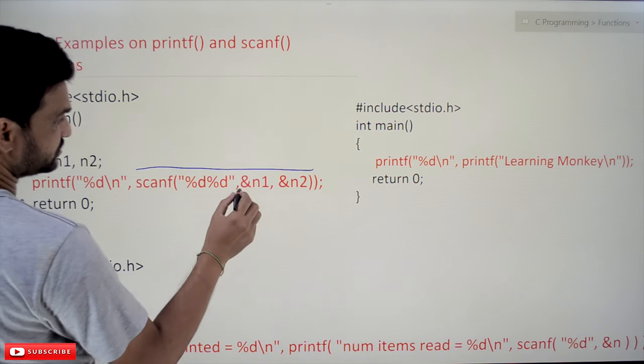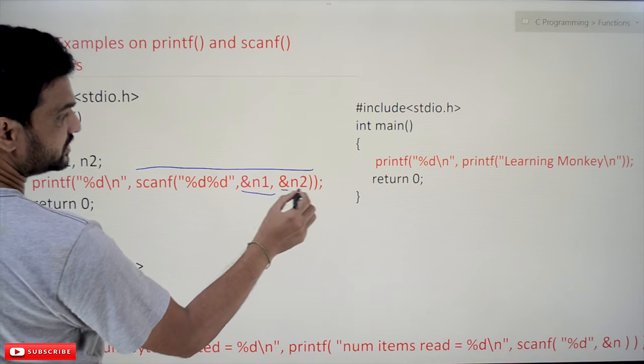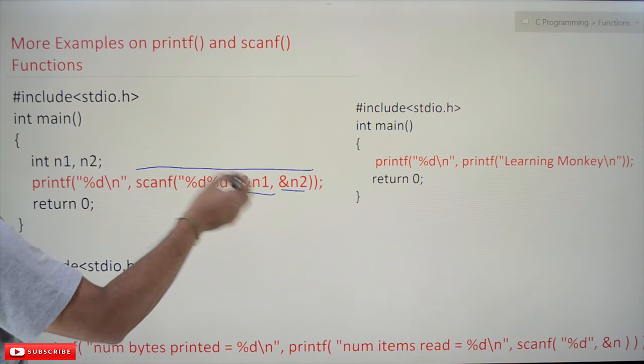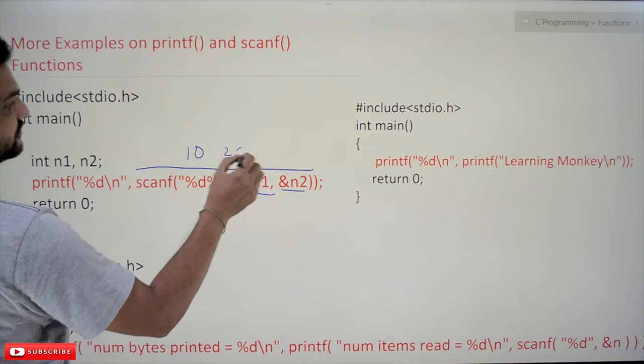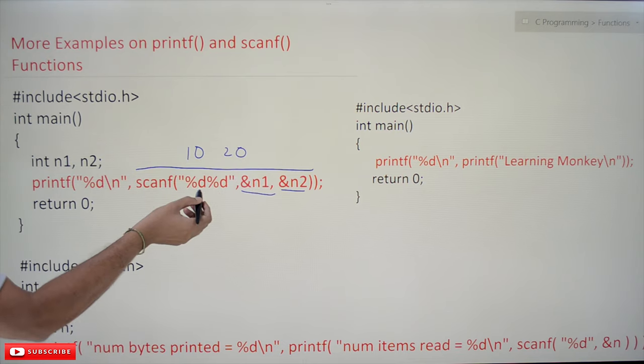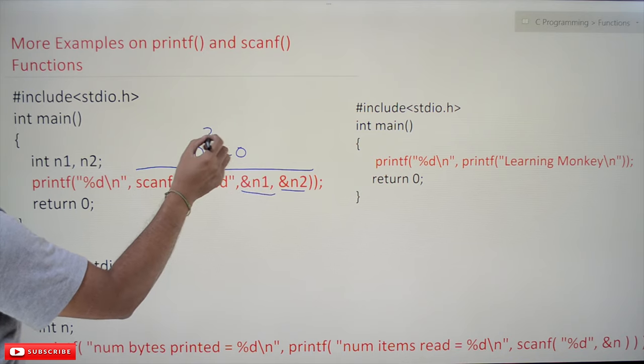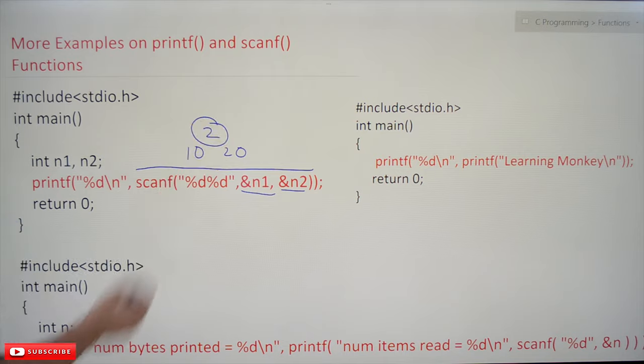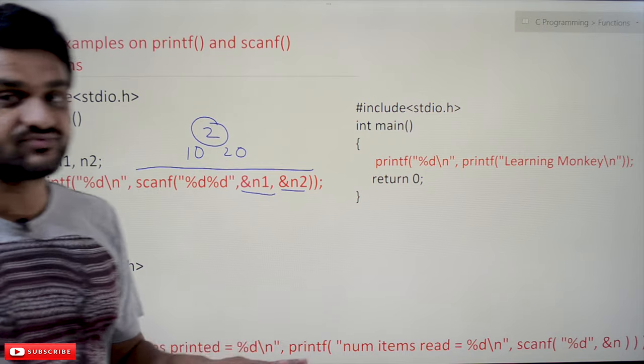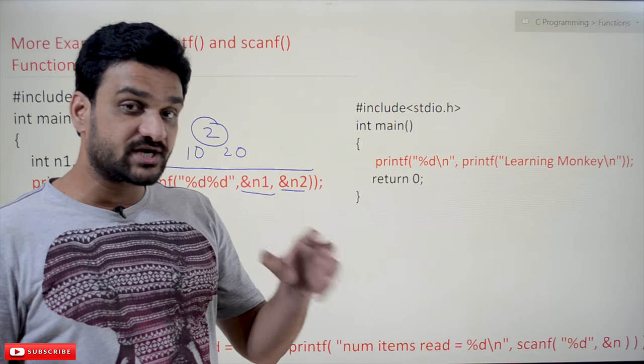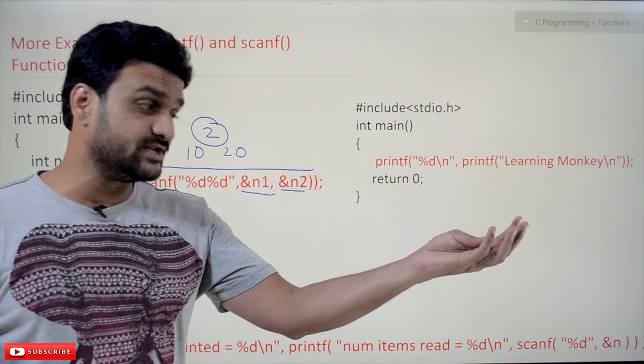It is going to produce an output - it will ask for two inputs. For example, if you have given 10, 20, it will give the return value. The return value of this scanf is going to be two, as two values have been successfully scanned.